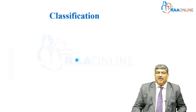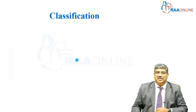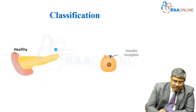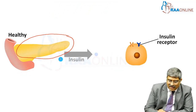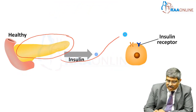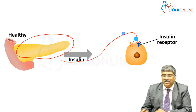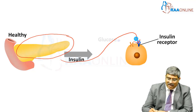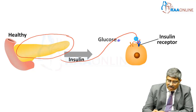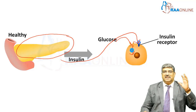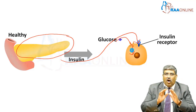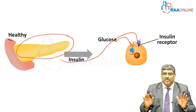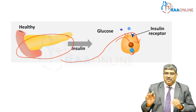Now coming to the pathophysiology, normally the pancreas secretes insulin and this insulin acts on the insulin receptor, thereby the glucose which is outside is transported inside the cell for utilization. This is the normal glucose metabolism which happens with secretion of insulin.